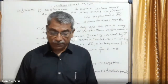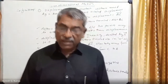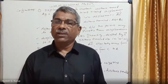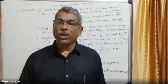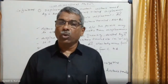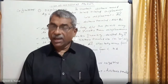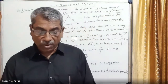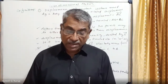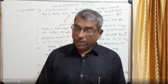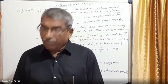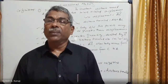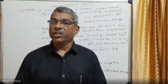There are many examples of one-dimensional motion. A car moving on the road is an example of one-dimensional motion. A train moving on rail tracks is also an example. In one-dimensional motion, if you attach a frame of reference with the body, only one coordinate will change.